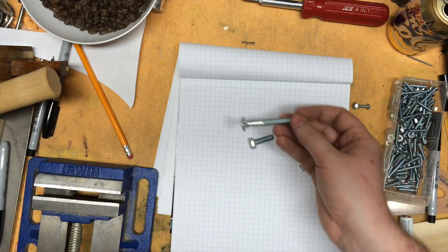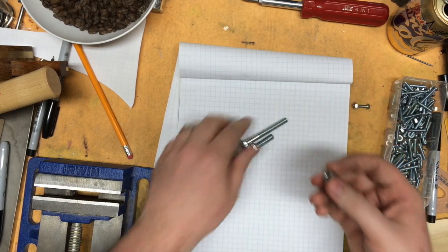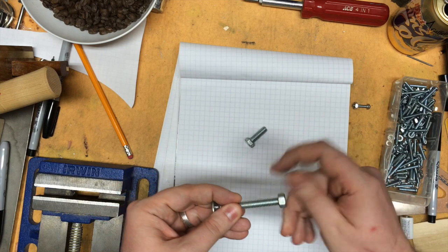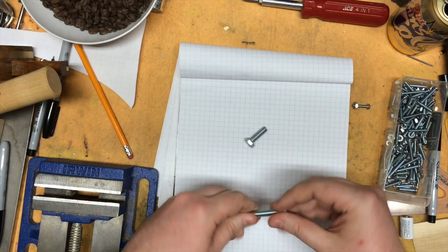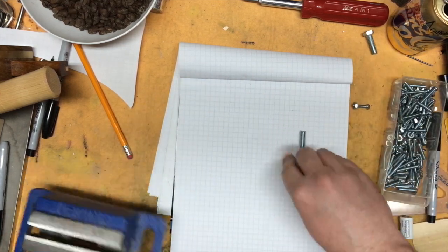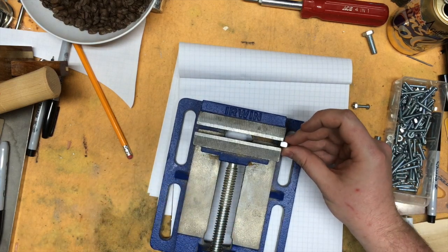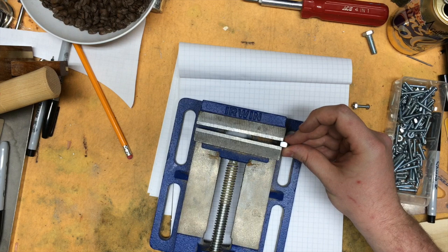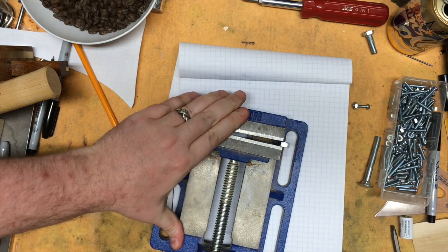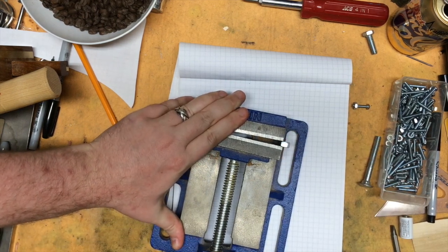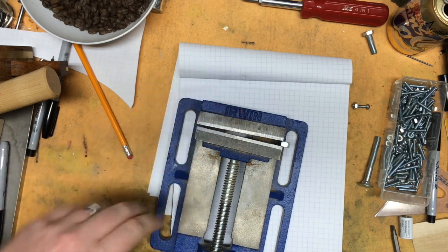It's a very easy way. So all you need to do is you're going to sacrifice one nut that fits whatever bolt you're wanting to modify. All you're going to do, and this is not the vice I would normally use for this, but it's the one you guys can see on video. Clamp it up, and you're basically going to make a bolt vice.